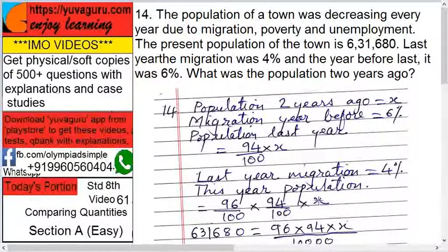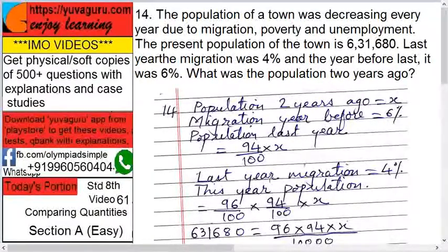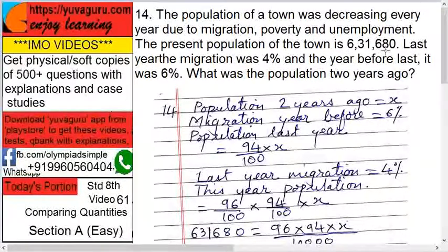But what is this population now? This is the present year population, because the previous one was last year. And now we have come to today's year, and today's population is given as 631,680.